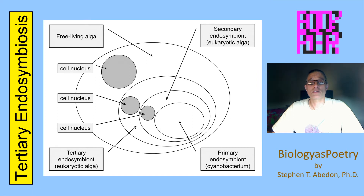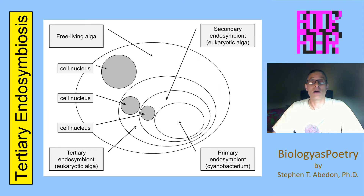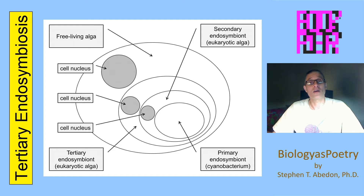With tertiary endosymbiosis, we have the strange situation where a prokaryotic cell lives inside of a eukaryotic cell, which lives inside of another eukaryotic cell, which lives inside yet another eukaryotic cell. The eukaryotic cells in the middle often are degenerated so that they have lost their nuclei — their cell nucleus. As a consequence, it's not really these four different cells living together, but nevertheless, their origin is one in which there are all of these four cells playing a role.